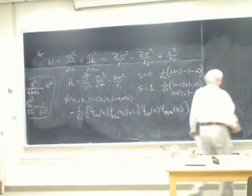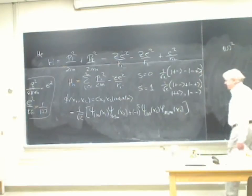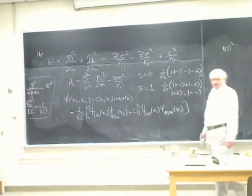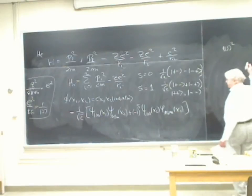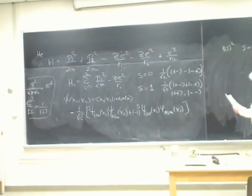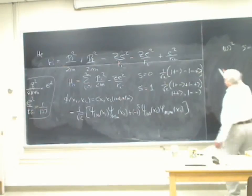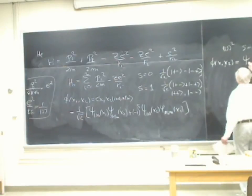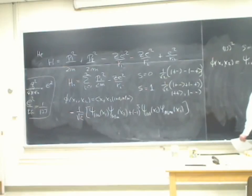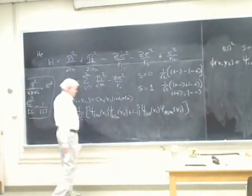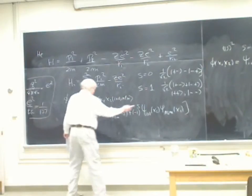The ground state is 1S², both electrons in the 1S state. If you're going to put them both in the 1S state, you can't have S equals 1 because that would give a minus sign and you get zero. So you need S equals zero, the spin is antisymmetric, and the space wave function is simply φ(x₁,x₂) = ψ₁₀₀(x₁) ψ₁₀₀(x₂).